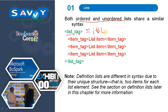Note: definition lists are different in syntax due to their unique structure — that is, two items for each list element. See the session on definition lists later in this chapter.